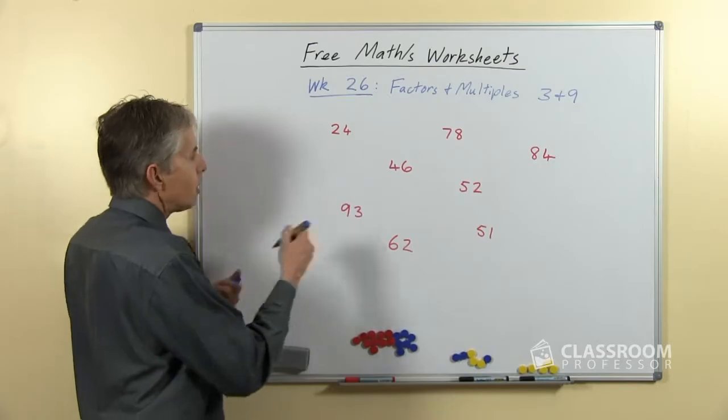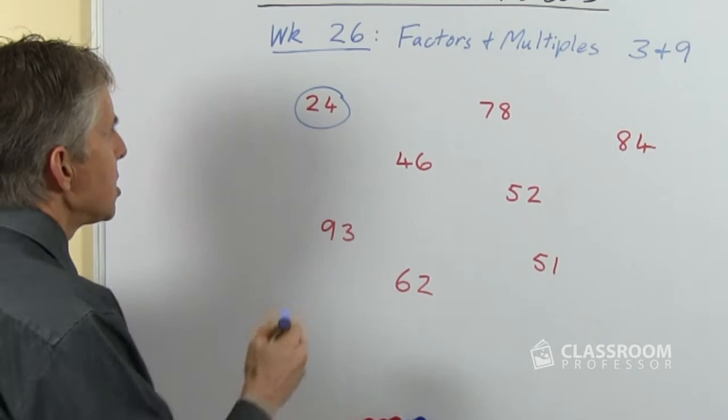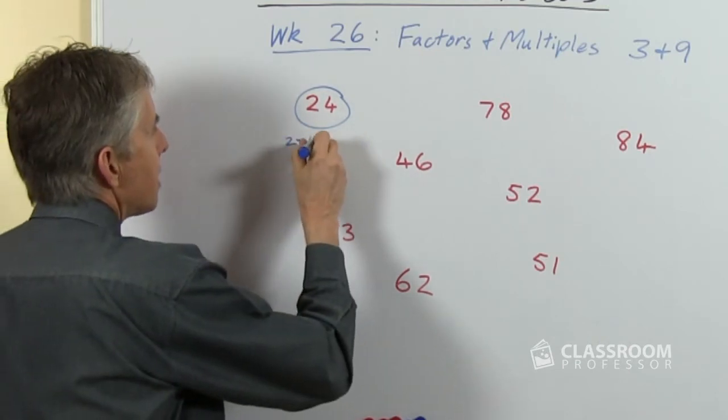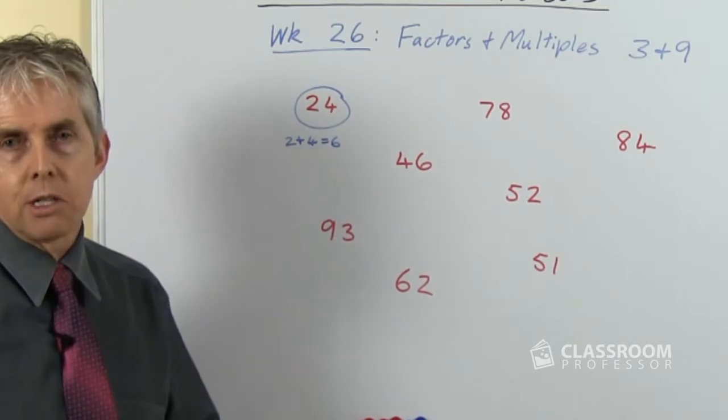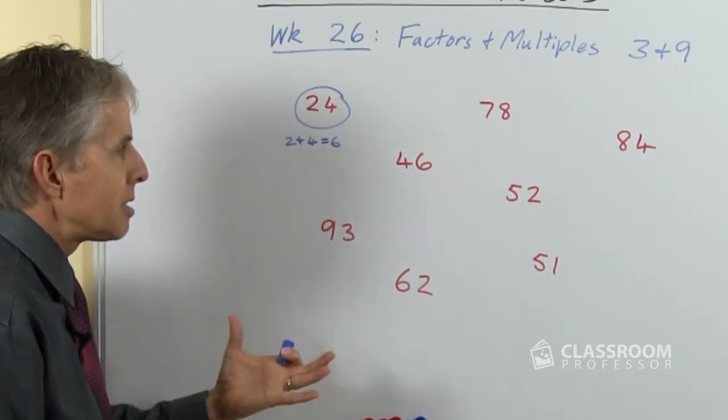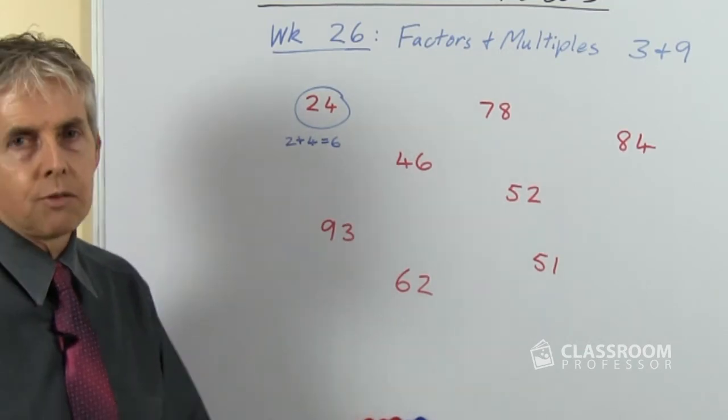So we can start with a number like 24 and see clearly that it is a multiple of three because 2 plus 4 equals 6. Now of course we also know that 24 is 3 times 8. So if we recognize any of these just from knowing number facts, that's going to be even faster and you don't have to add it up.